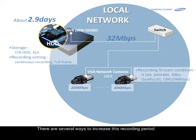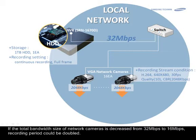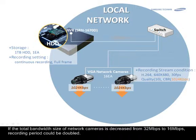There are several ways to increase the recording period. The first way is to decrease the bandwidth size of the network camera. If the total bandwidth size of the network camera is decreased from 32 megabits to 16 megabits, the recording period could be doubled.